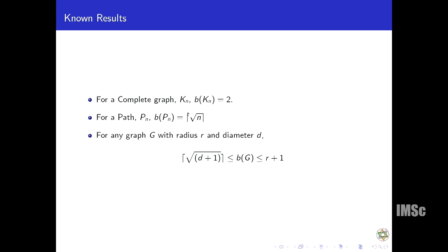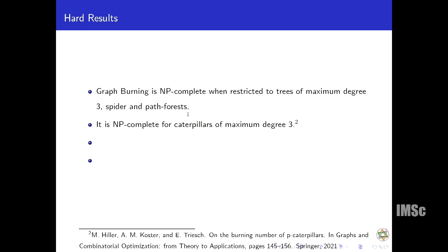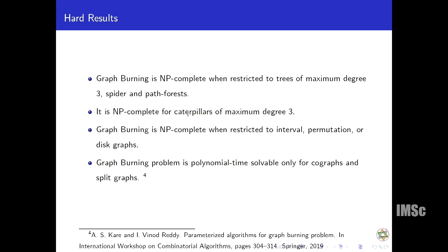If r and d are the radius and diameter, then this burning number is bounded by ceiling of square root d plus one and r plus one. Now what are the hard results? In general graphs it is NP-hard. There are some restricted classes of graphs which look very easy, so we can think maybe it is easy to find the burning number. But for trees with maximum degree 3, spider, or path forest, it is also NP-hard. For caterpillars of maximum degree 3, it is also NP-hard. For interval graphs and permutation graphs, it is NP-hard. It is polynomial time solvable only for co-graphs and speed graphs.